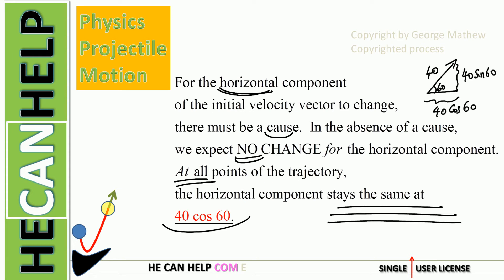The 40 cosine 60, which is 20 — 20 meters per second — it stays the same. So at all points of the trajectory, you have the same horizontal velocity component.